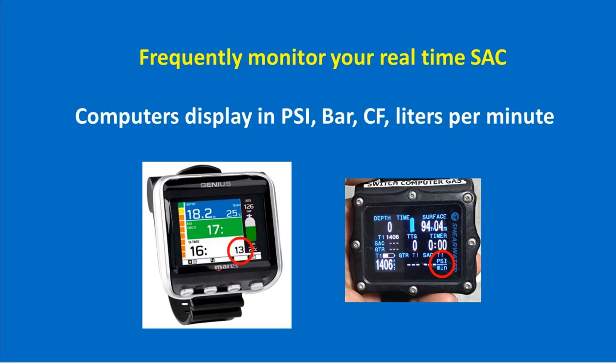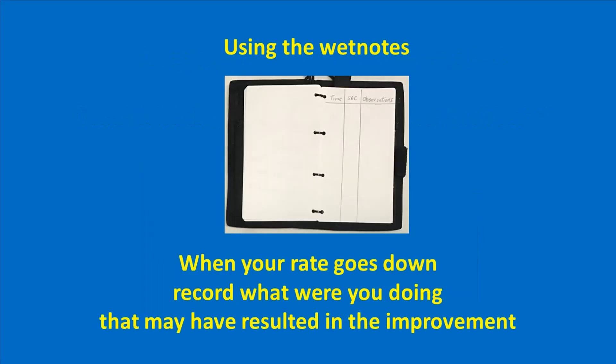We have two different computers here: on the left is a Mares Genius, and on the right is a Shearwater Perdix AI. Wrist-mounted computers may display your SAC rate in PSI, bar, cubic feet, or liters per minute. If displayed in PSI or bar, you'll need to go through a conversion process based on your tank size to get the actual SAC rate in cubic feet per minute. In your wet notes, monitor your computer and record what you were doing when your rate went down, and also what you were doing when your rate went up, to avoid repeating those behaviors.